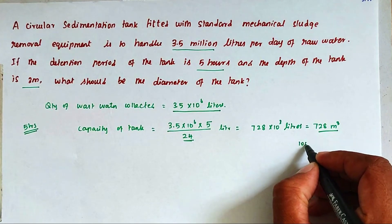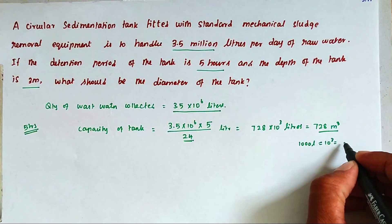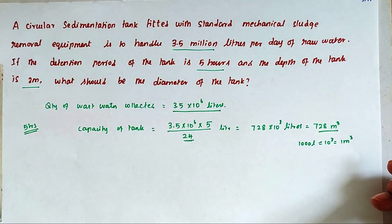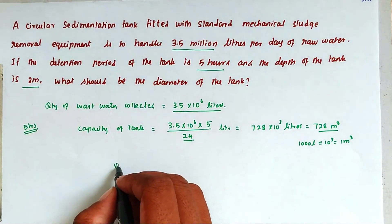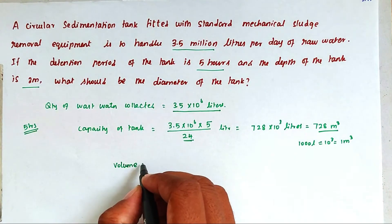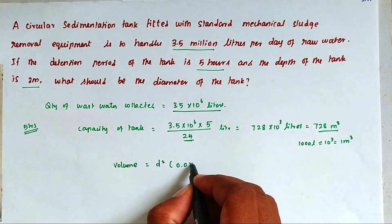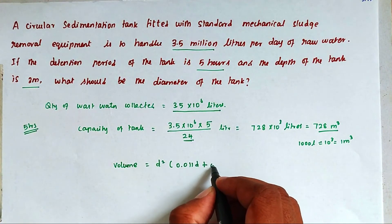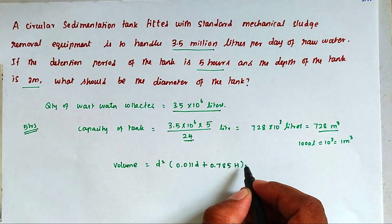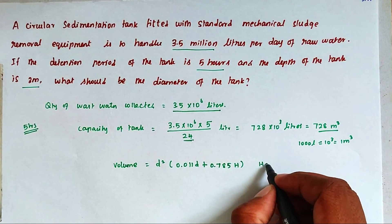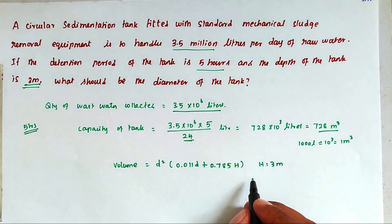Because 1000 liters, that is 10 power 3, equals 1 cubic meter. So now we can find out the volume of tank using the formula: volume equals D squared into 0.011D plus 0.785 into H. We substitute H equal to 3 meter, as given in the problem.